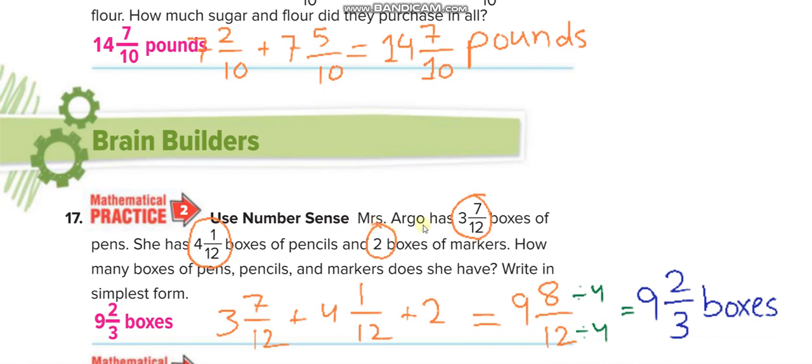Here Mrs. Khan, we add 3 whole 7 over 12 boxes of pens, she has 4 whole 1 over 12 boxes of pencils and 2 boxes of markers, so you add all of them. 3 whole 7 over 12 plus 4 whole 1 over 12 plus 2. First add the whole numbers, 3 plus 4 plus 2 equals 9. Then add the fractions, 7 over 12 plus 1 over 12 equals 8 over 12. Then we simplify it, 9 whole 2 over 3.